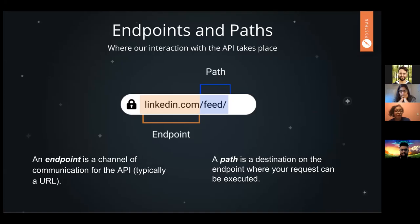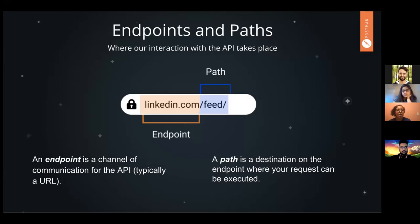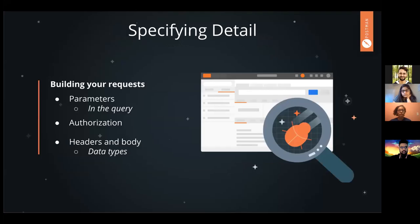The path is the destination on that endpoint where your request can be executed. In this example, linkedin.com is our endpoint — we'd be using the LinkedIn API. The path is feed. When you log into LinkedIn, the path you automatically see is feed, that's your homepage. There are a couple of things I can do on the feed: I can get all the information, I can make a new post, however I can delete my own post but I can't delete other people's posts — because that's not what you can do on that path, you don't have those permissions.